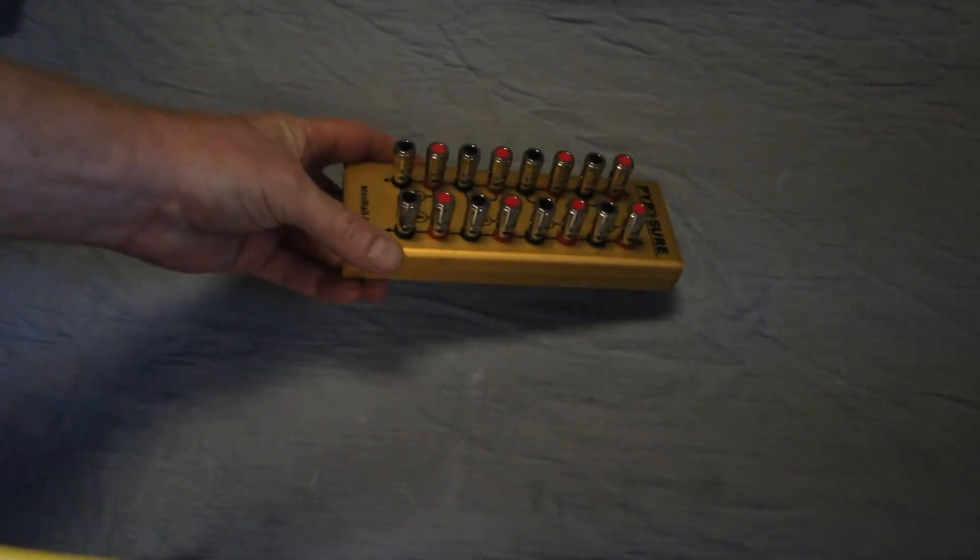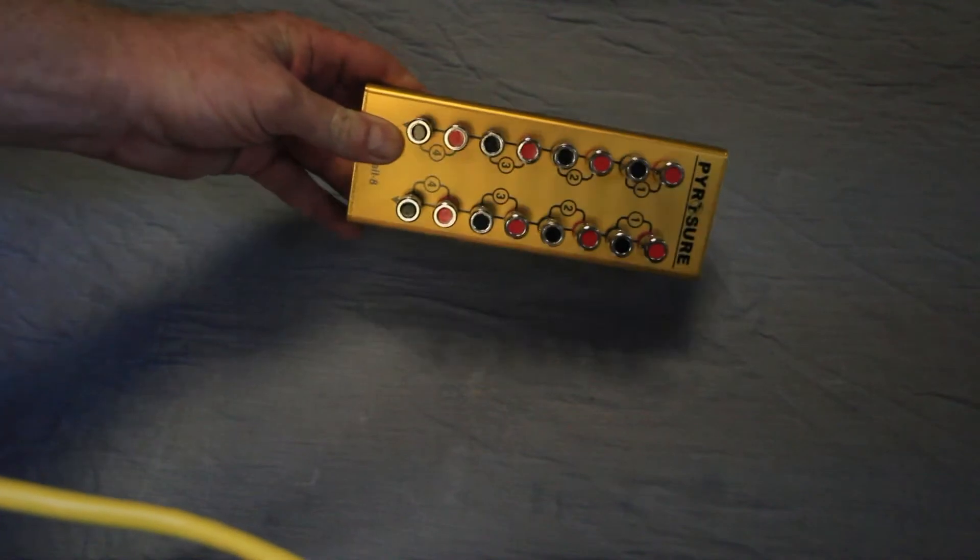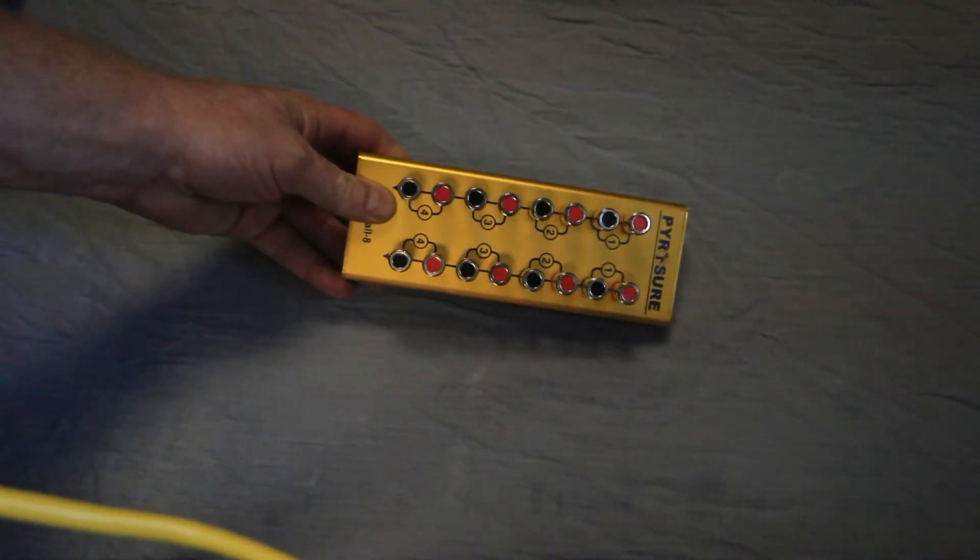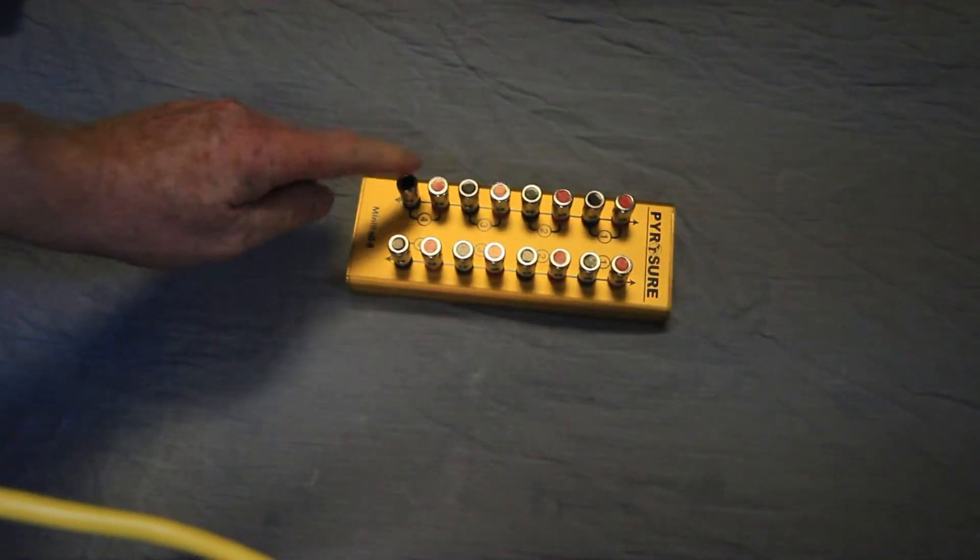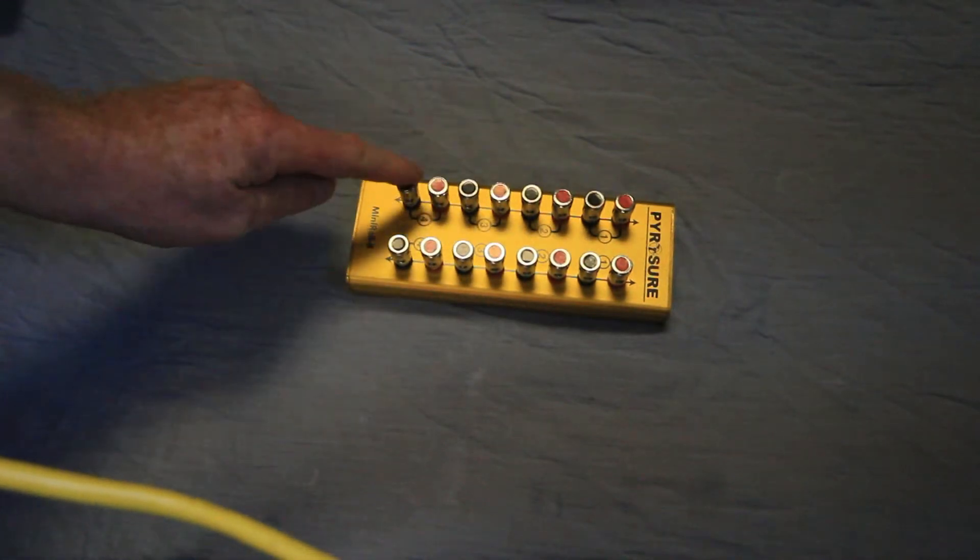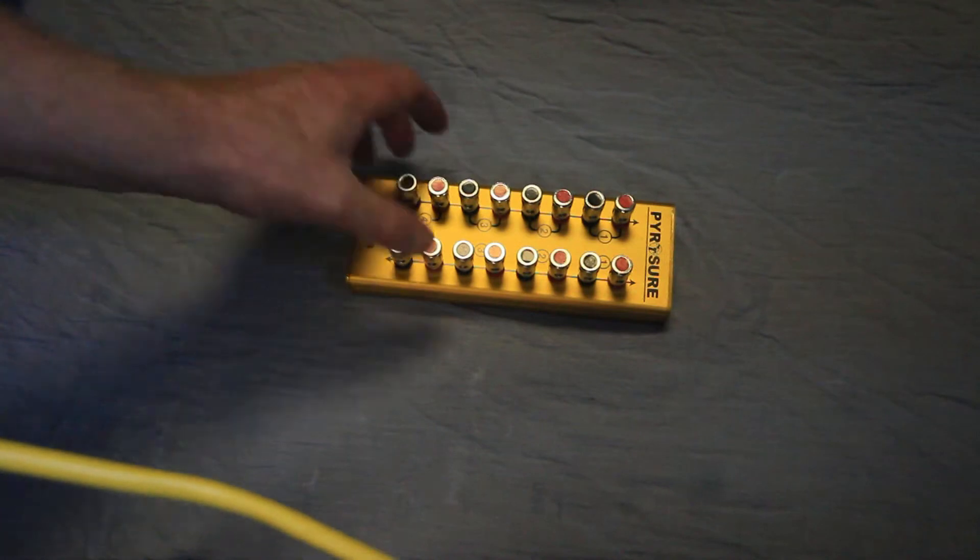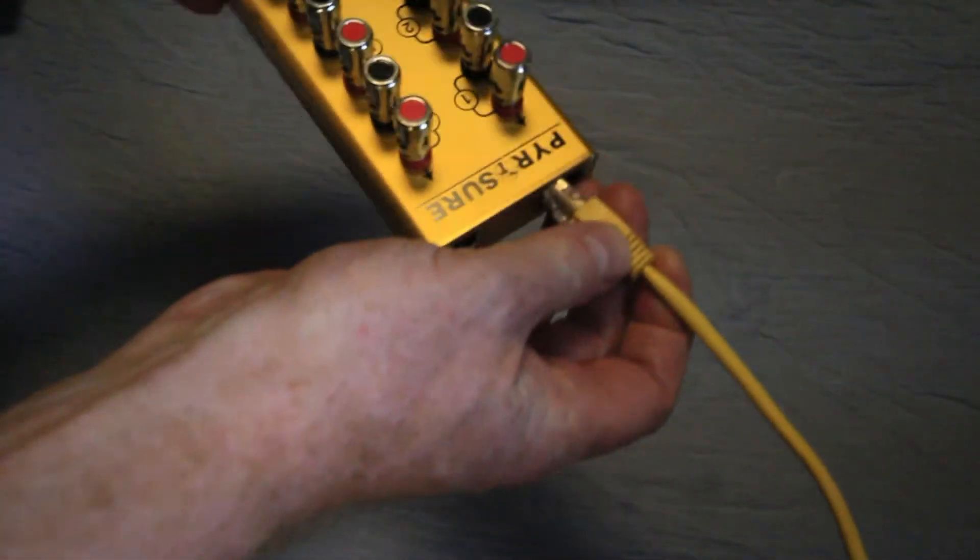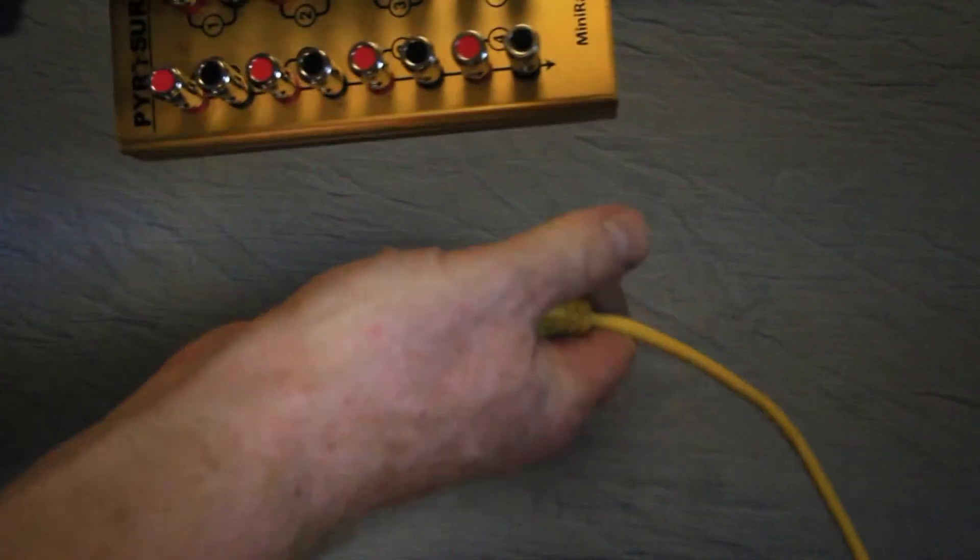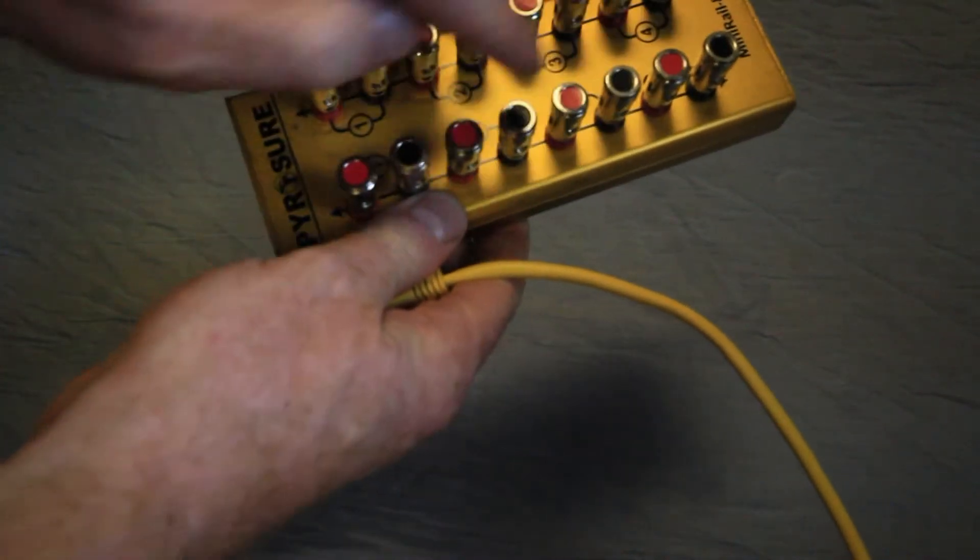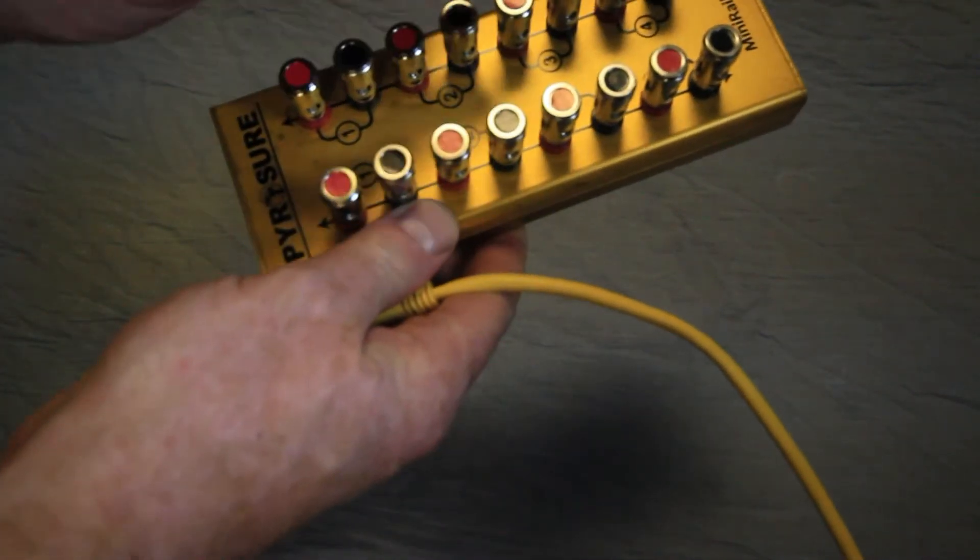This is the PyroSure Mini Rail 8. As the name suggests it has 8 connections in 2 groups of 4, numbered 1, 2, 3, 4, 4, 3, 2, 1. No matter which direction you plug this into using the Cat5 cable, left or right, the numbering will still be the same.